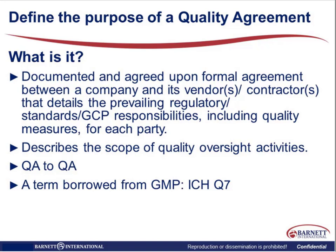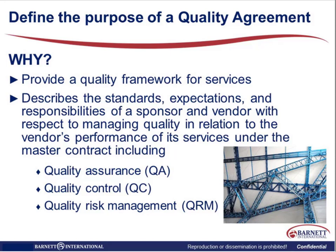It describes the scope of what those quality oversight activities might be. And here's something really important to take away: it is QA to QA — clinical QA to clinical QA. The term 'quality agreement' is borrowed from the GMP world in ICH Q7. Why do we need them? They provide a quality framework for services, and what the quality agreement does is confirm that there's effective communication and escalation processes in place that would allow optimal and immediate sharing of information between your vendors' QA and your QA.